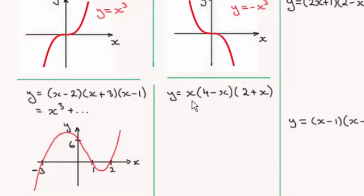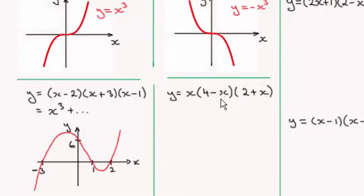Moving on to the next graph: y equals x times (4 minus x) times (2 plus x). I'll look at the x cubed term by expanding. We get x times minus x, which is minus x squared, times x, giving minus x cubed. So I know this graph is going to be decreasing at the start — coming down from the left.